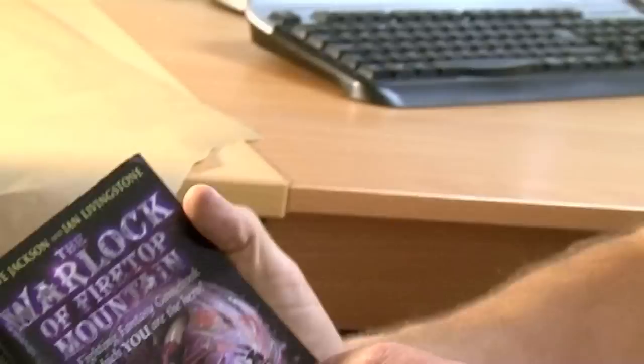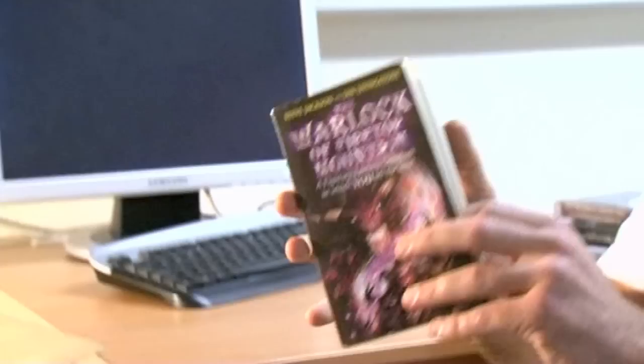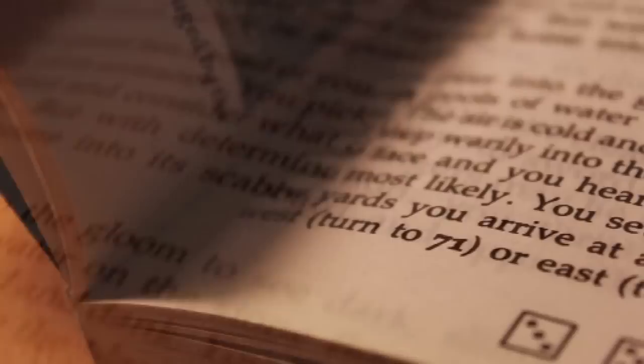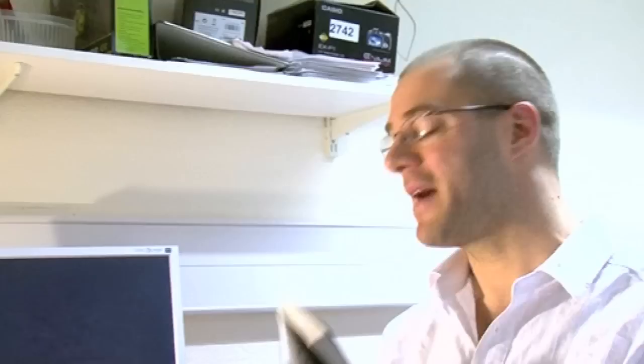This book is The Warlock of Firetop Mountain. Doesn't that just leap off the page? That's fantastic. You have to start somewhere. So we'll start at number one. That's where these books always begin with a little description of the adventure you're about to have. And then at the end, after a few yards, you arrive at a junction. Will you turn west, in which case turn to page 71, or east, in which case turn to 278? And we make a choice. And I'm going to show you that choice on the graph.